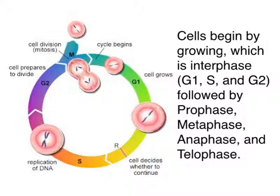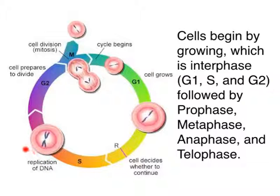Cells begin by growing, which is interphase, followed by prophase, metaphase, anaphase, and telophase. As you can see, in a normal cell, S phase is much longer for DNA to replicate.